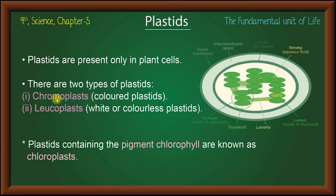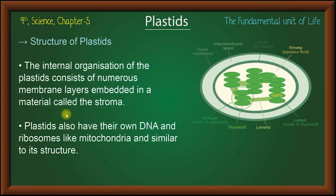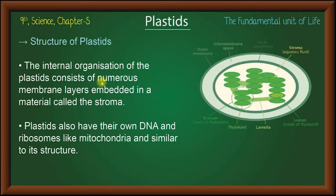So: chloroplast contains chlorophyll, chromoplast is colored plastic, and leucoplast is colorless plastic. The structure of plastids consists of numerous membrane layers embedded in a material called stroma.